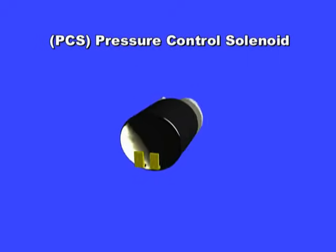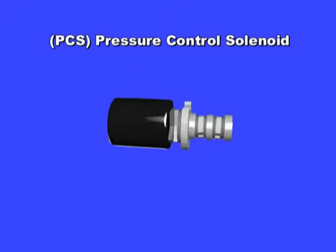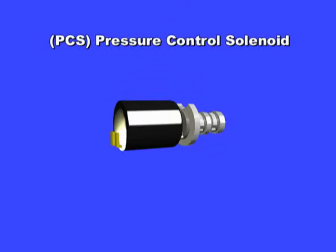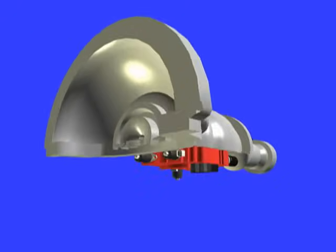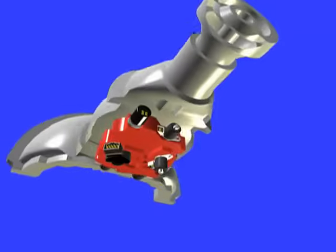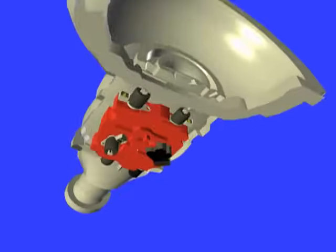All pressure solenoids or PCS units are duty cycle controlled components. Do not apply 12 volt power to one of these units or they will get ruined. These are very low resistance units in the range of 1 to 3 ohms. This is the reason why they are duty cycle controlled.